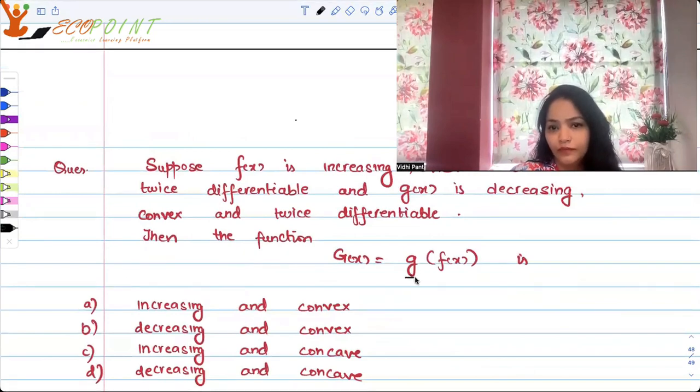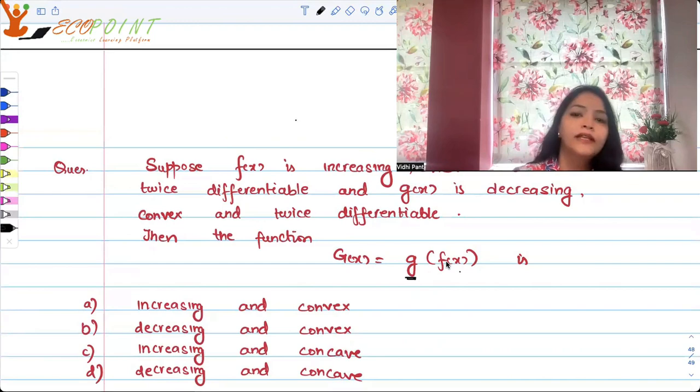So g is decreasing and convex. It's a decreasing and convex function applied on an increasing and concave function. If you do that, then do we surely have a result? Let's see.